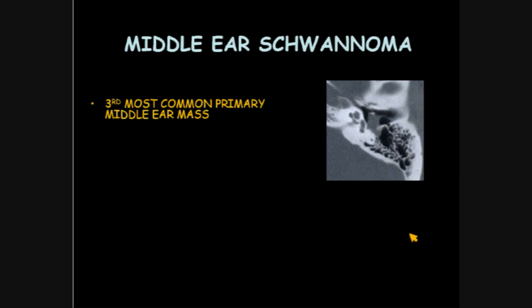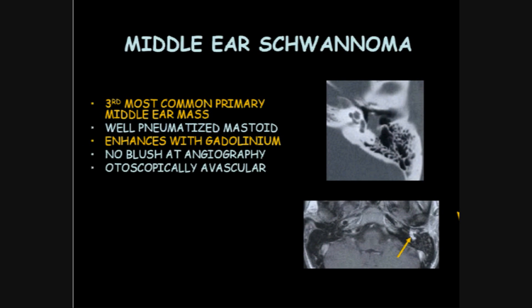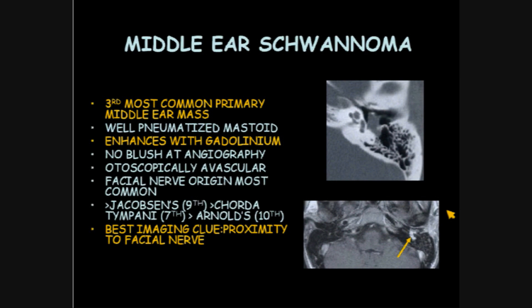Middle ear schwannoma is the third most common primary middle ear mass. Well-pneumatized mastoid typically. They enhance with gadolinium. There's no blush at angiography. They're otoscopically avascular as well. Usually they arise from a branch of the facial nerve, and the best imaging clue is the proximity to the facial nerve. But middle ear schwannomas can also arise from Jacobson's nerve, the chorda tympani, or Arnold's nerve.